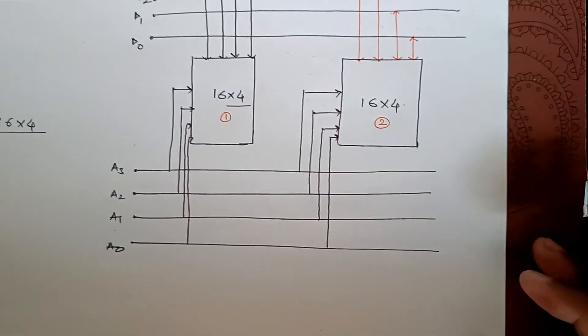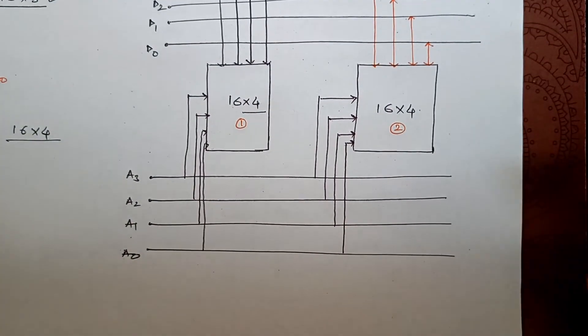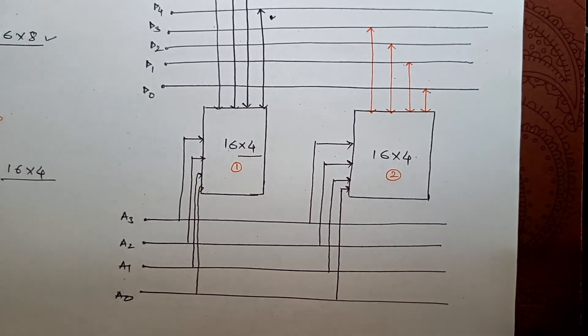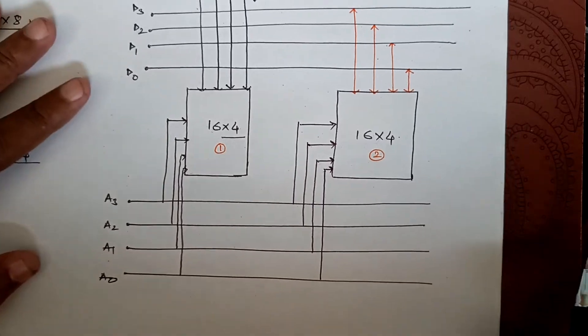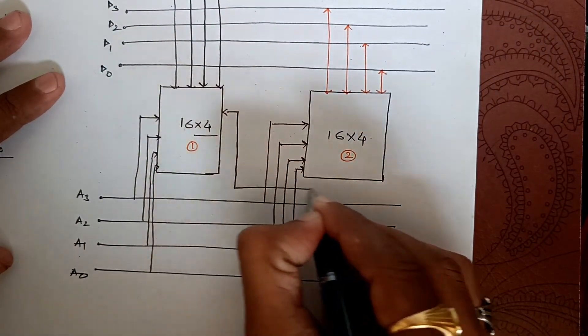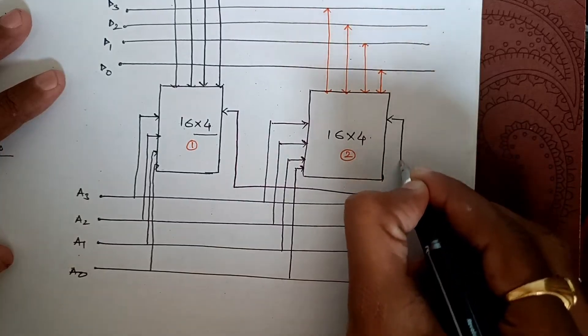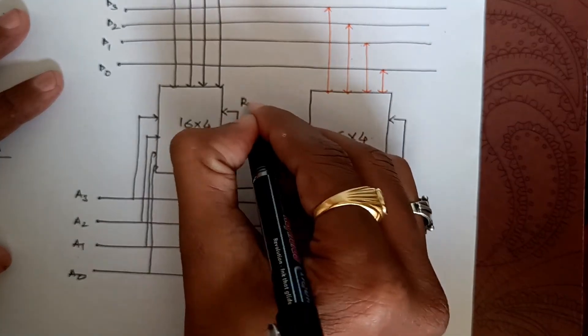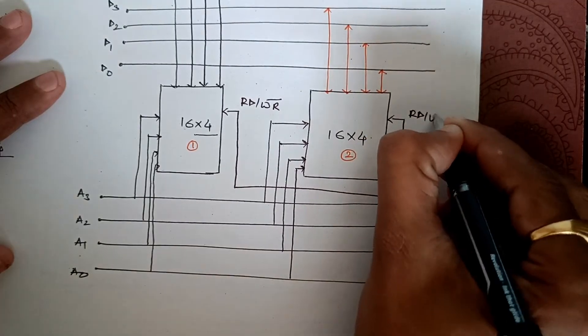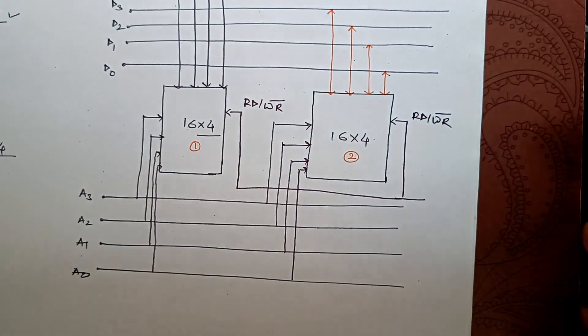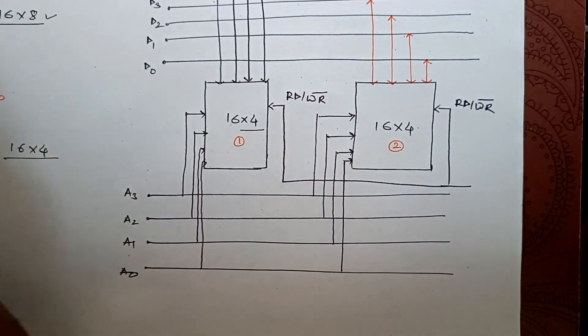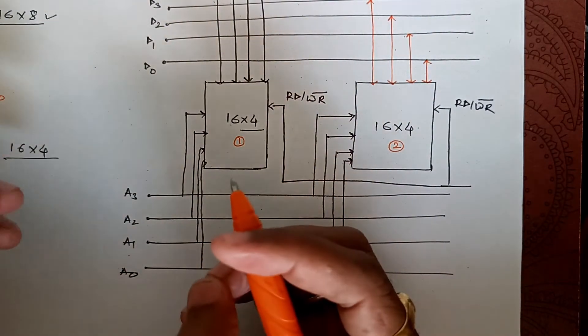We've connected the data lines as well as the address lines. Now next we have to go for read/write operation. So I will be connecting read oblique write bar, which we'll connect to both ICs. Now we are left with only one signal which we call the control signal. So this is our control signal.